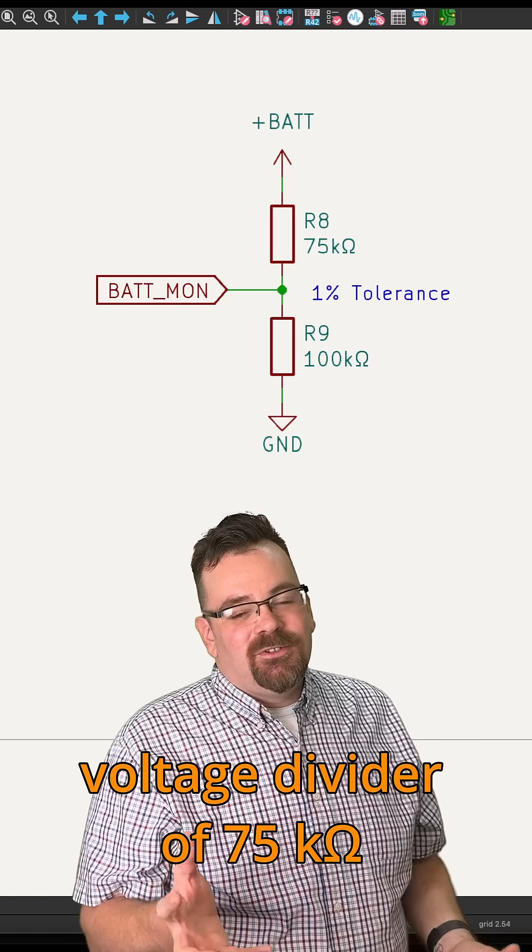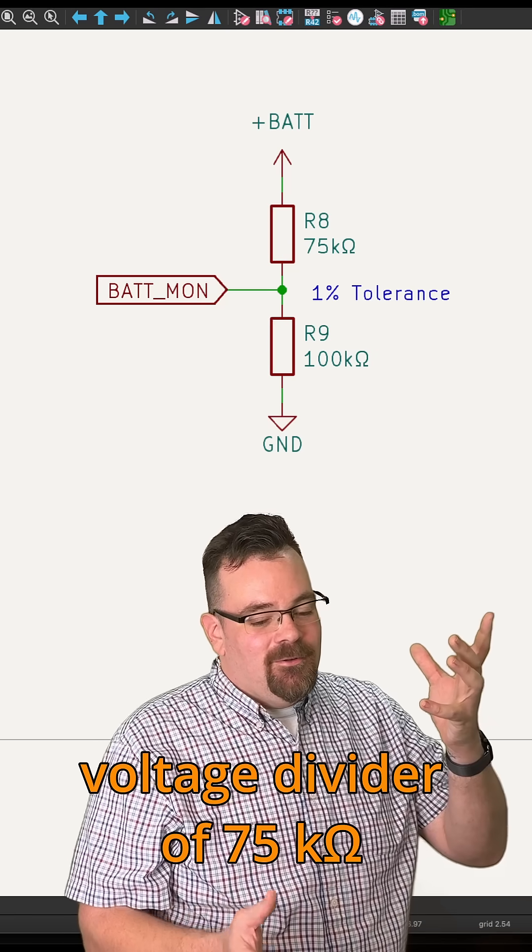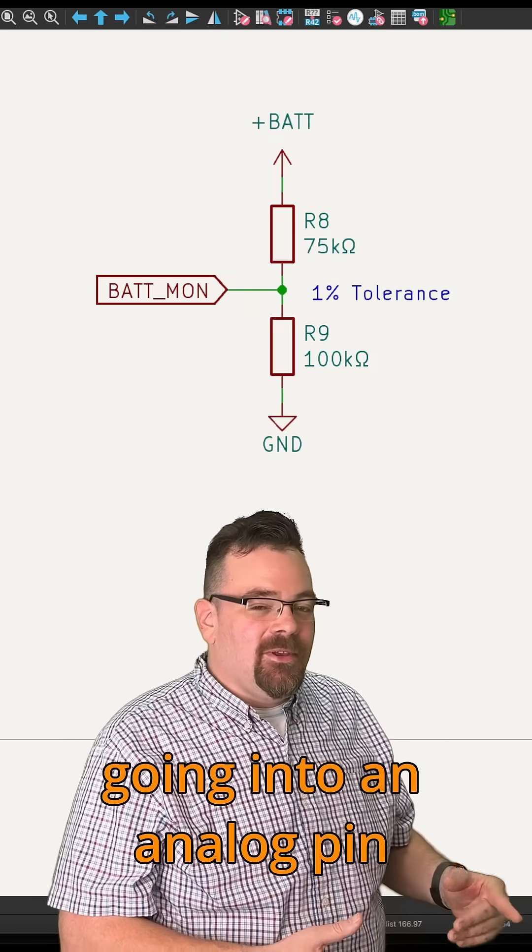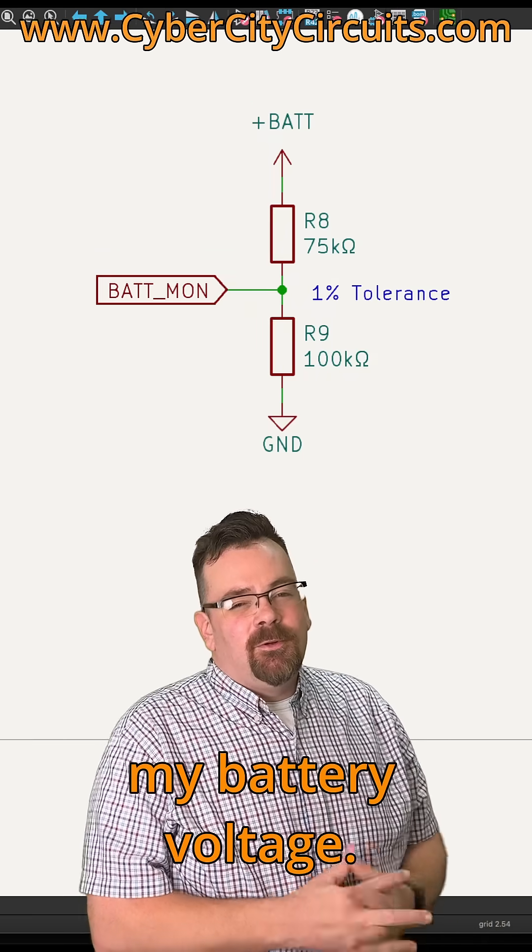Next, I have a simple voltage divider of 75 kiloohms and 100 kiloohms. And what this will do is give me a sense voltage going into an analog pin so I can monitor my battery voltage.